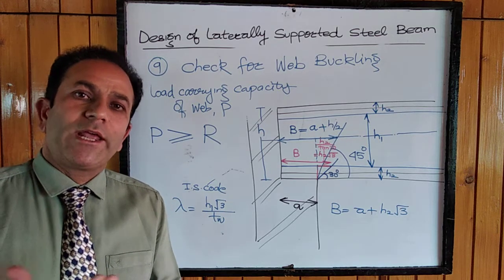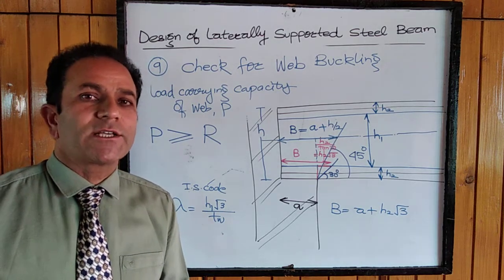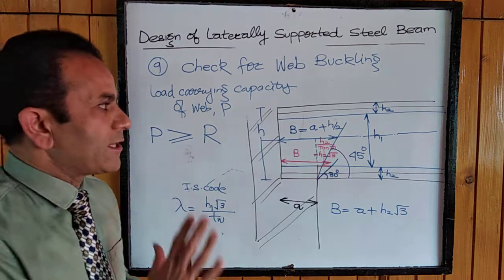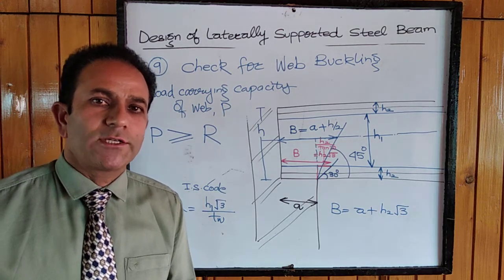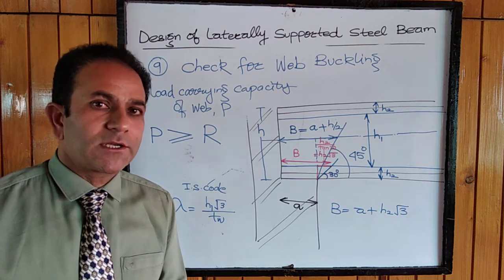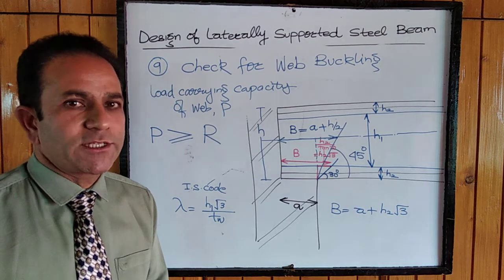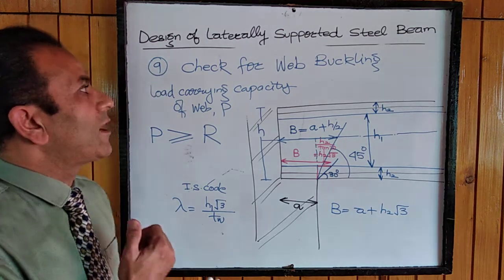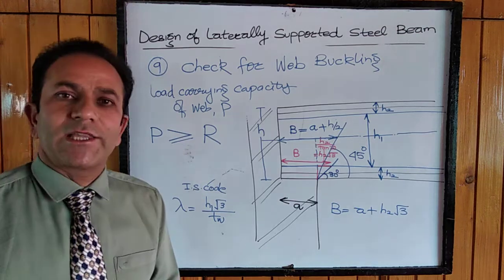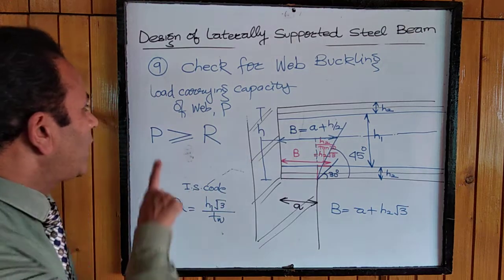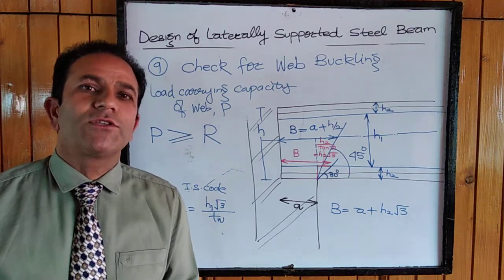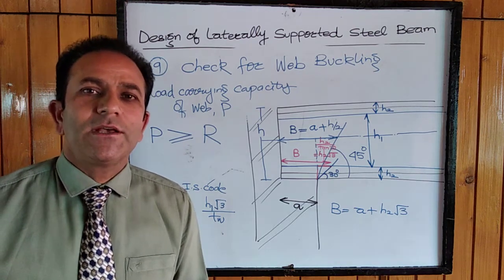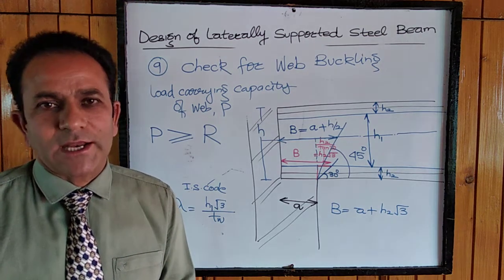Equate moment of resistance to bending moment to get the required Zxx. Select a trial section from the steel table with sufficient Zxx, then check the section for: shear (stress ≤ 0.4fy), deflection (≤ L/325), web crippling (bearing stress ≤ 0.75fy), and web buckling (load carrying capacity ≥ reaction R). Only a section satisfying all these conditions can be selected as the steel beam for the given conditions.